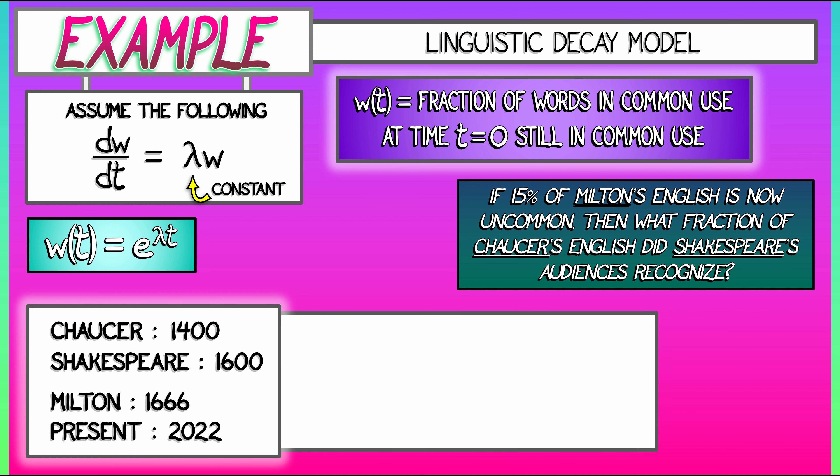So, how do we use this assumption of 15% of Milton's English being unfamiliar? We know the solution to this differential equation. w(t) is e to the lambda t. But we don't know what lambda is. However, we do know, given this assumption, that e to the lambda times (2022 minus 1666) has to equal 0.85. If 15% of the words are unfamiliar, 85% of the words are still in use.